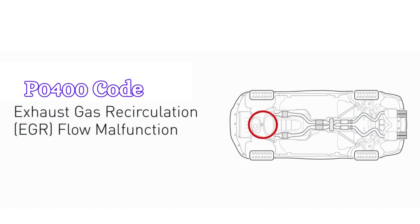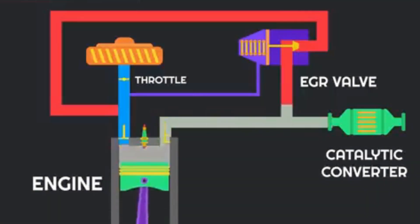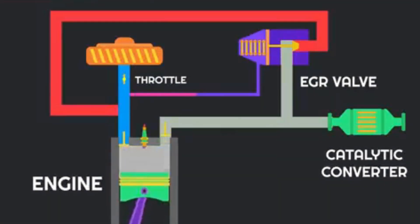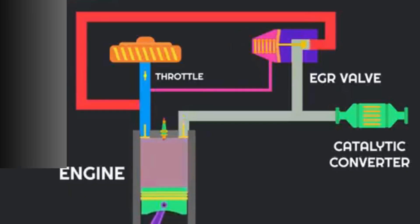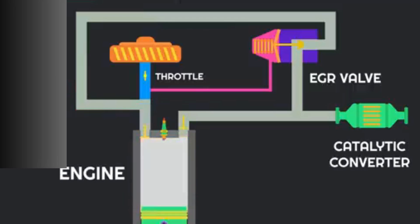P0400 is a trouble code that pops up when there's an issue with your car's exhaust gas recirculation system. This code is logged when the powertrain control module of your vehicle detects that the EGR flow is lower than expected. The EGR system helps reduce emissions by recirculating a portion of the exhaust gases back into the engine's combustion chamber, lowering the combustion temperature and reducing the formation of nitrogen oxides.